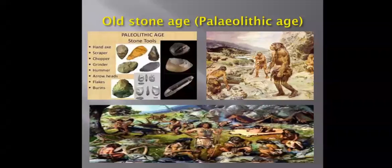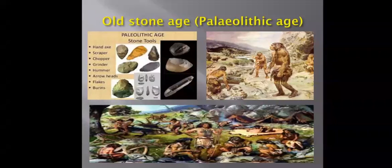In the last lesson, Lesson Number 5, we saw the Homo habilis — meaning the one who used their hands skillfully — and the Homo erectus, the human who stood up straight. They belong to the Old Stone Age and they made their tools using the percussion technique.